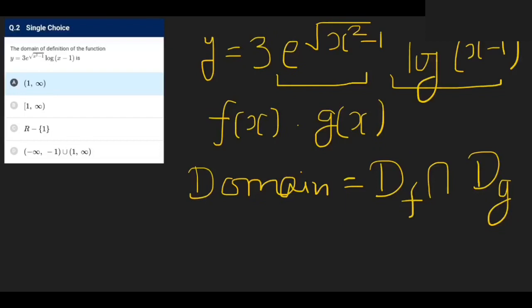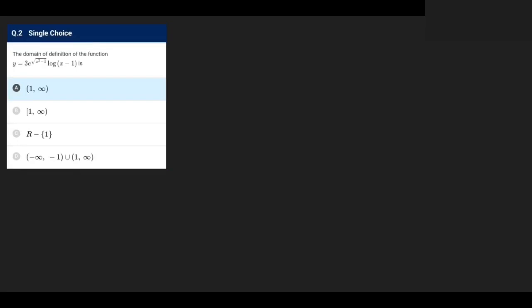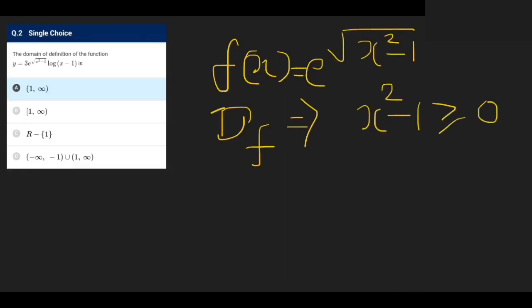Let me write the first function: f(x) equals e raised to the power of square root of x squared minus 1. For the domain of this function, x squared minus 1 should be greater than or equal to 0, because the square root of x squared minus 1 must be non-negative. This implies that (x + 1) times (x - 1) should be greater than or equal to 0.